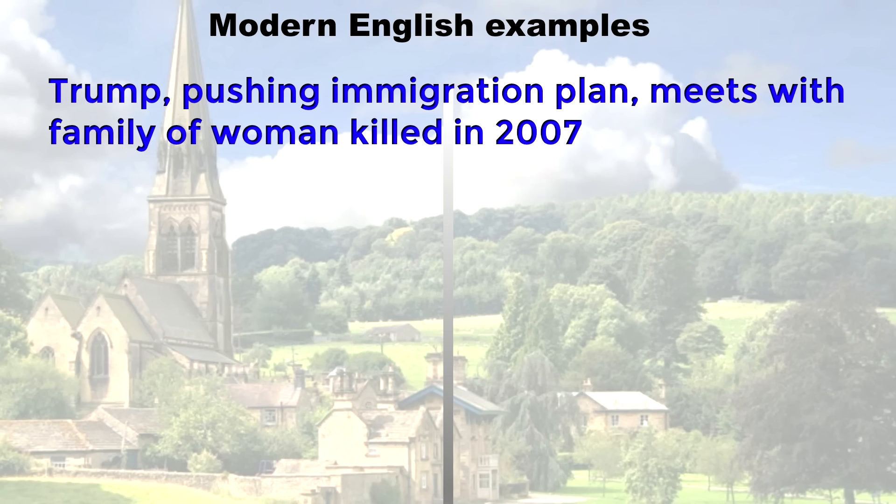Well, let's look at a couple of sentences in English, and let's look at the influences we can find, and let's see if there's more Germanic or more Romance influence. This one's a newspaper headline. Trump pushing immigration plan meets with family of women killed in 2007.